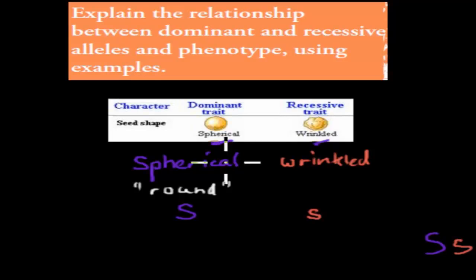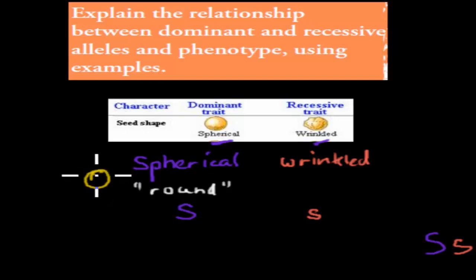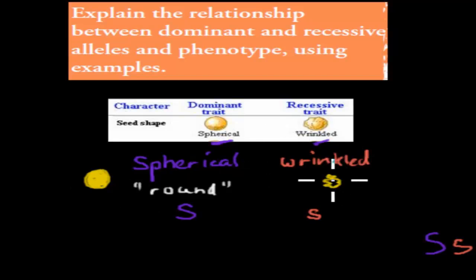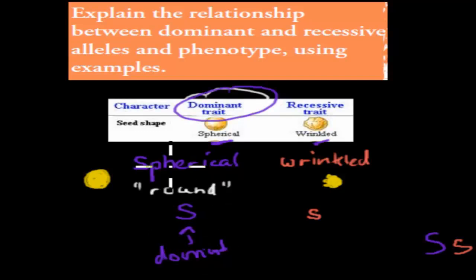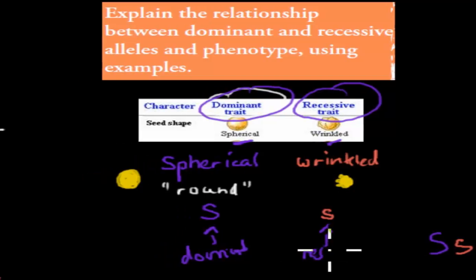We have spherical and wrinkled. Spherical just means round. So these are the round versions — one is round and the other is wrinkled, just a bit more wrinkly. Because round is the dominant version, we always use the capital letter, so big S is our dominant allele standing for round. Whereas wrinkled is recessive, so small s is recessive.